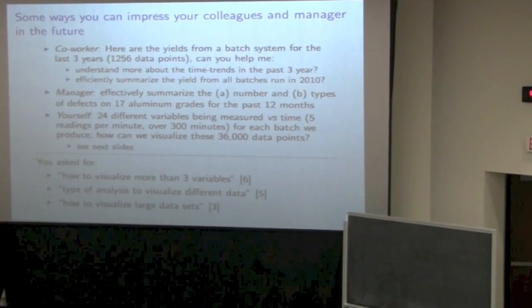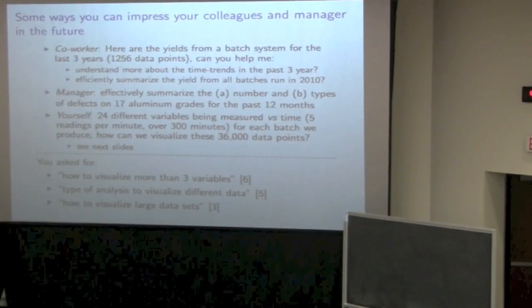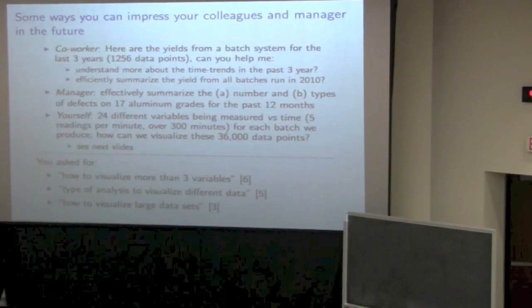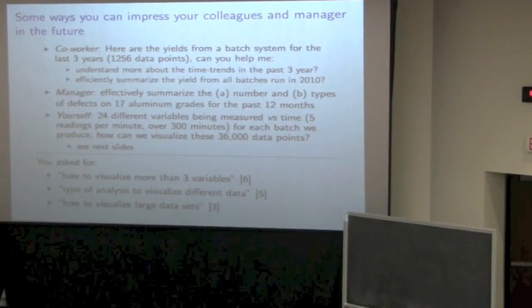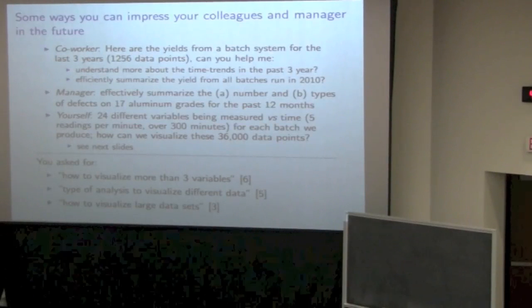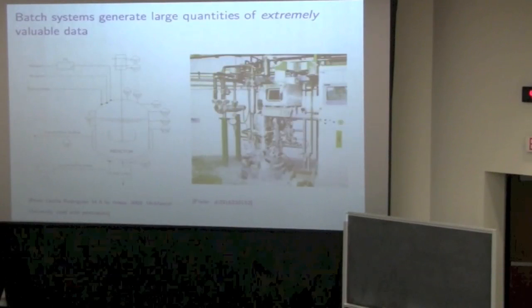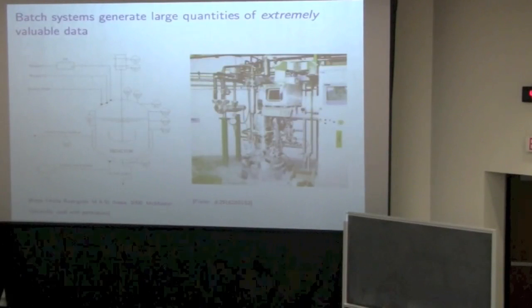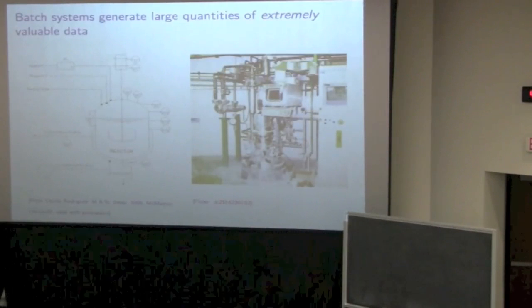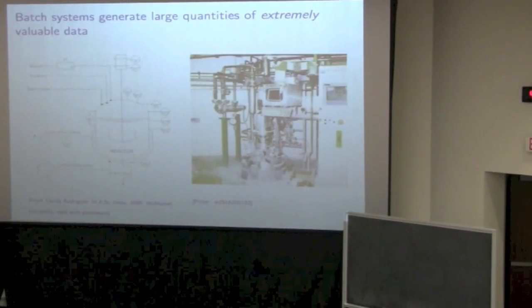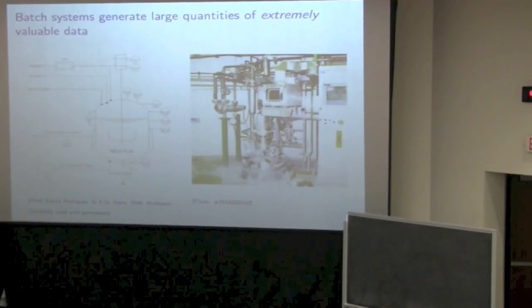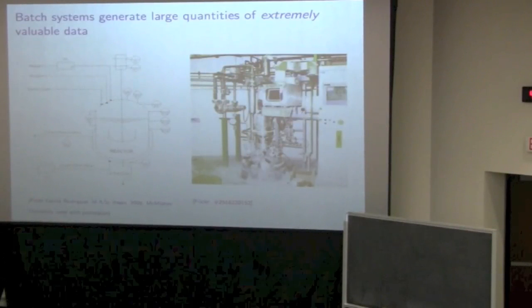And then this next one here is batch data. We've got 24 variables being measured against time over 300 minutes. That's a fairly large data set, 36,000 data points. Let's take a look at that. Now, some of you have seen these sort of slides before. I've spoken about batch data in the reaction line and in other cases. Let's just quickly recap the form on here. On the left, we've got a batch reactor. So those non-chemical engineers in the room, this is where we make products in that reactor.